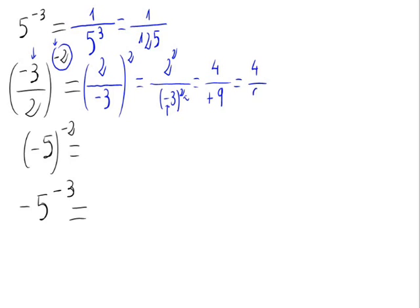For the third example, we have a negative number raised to a negative exponent. So, as in the first example, we have to do 1 divided by the number, minus 5, and the number raised to the power, that is, 2.